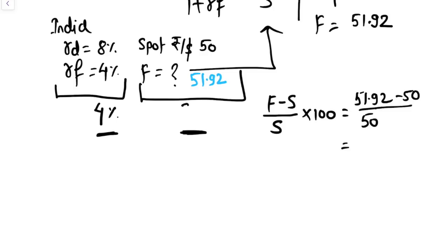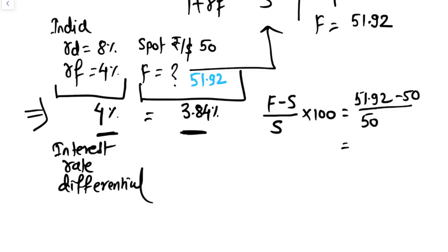So I can write down 3.84%. So Uncovered Interest Rate Parity Theory says that the interest rate differential should be approximately equal to the forward premium or discount.